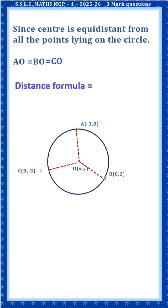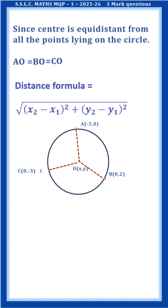These are the radii. We can calculate the measure of the radii with the help of the distance formula — that is, the square root of (x2 minus x1) whole square plus (y2 minus y1) whole square.